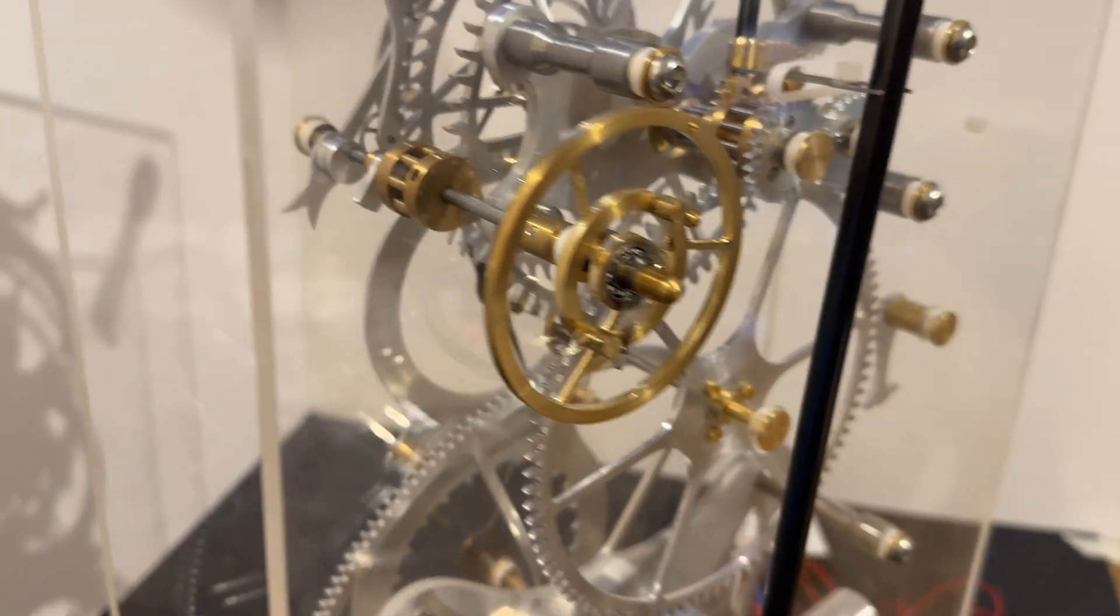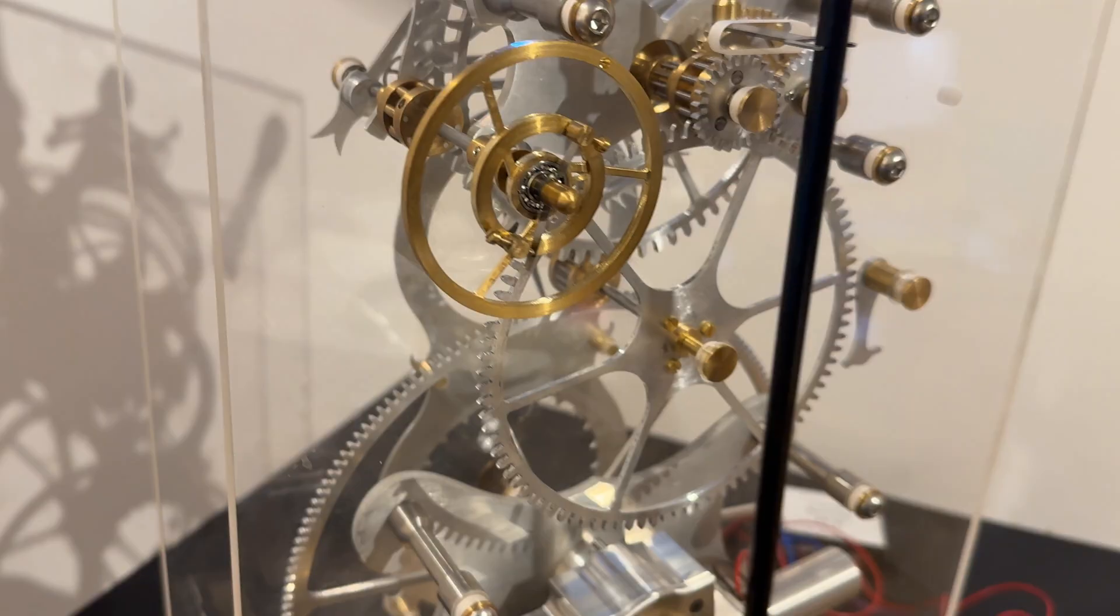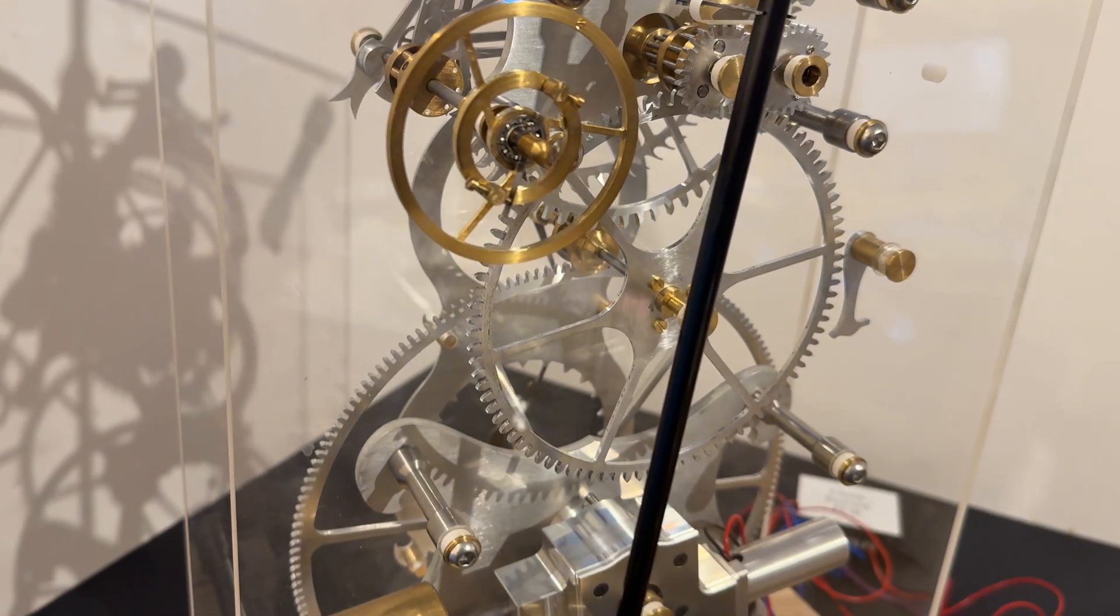The brass wheel you can see is an inertial flywheel designed to dissipate the excess energy from the remontoir.